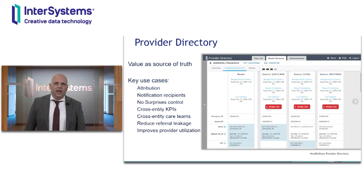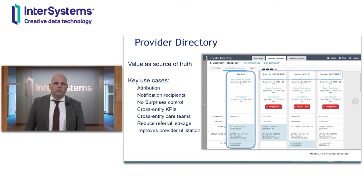The value of Provider Directory is to serve as a single source of truth. This source of truth is created by using information from multiple origins, such as provider records from East Care Clinic, an echo credentialing system, and a WestMed IDN. These produce a master record for provider Fred Johnson. Provider Directory can be used for multiple use cases, such as provider attribution, reducing referral leakage, supporting no-surprise billing, as well as other high-impact use cases.